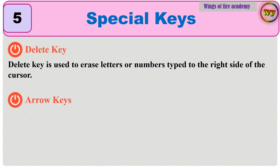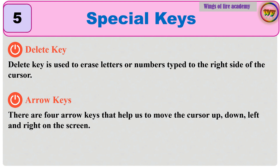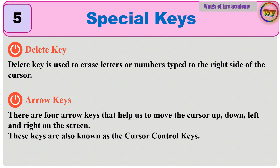Arrow keys. There are 4 arrow keys that help us to move the cursor up, down, left and right on the screen. These keys are also known as the cursor control keys.